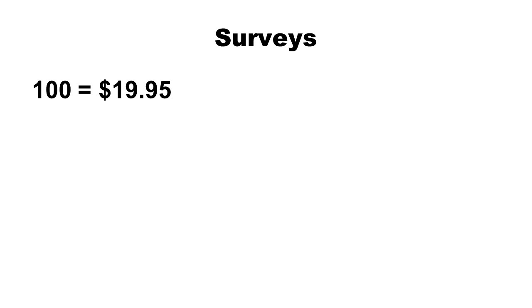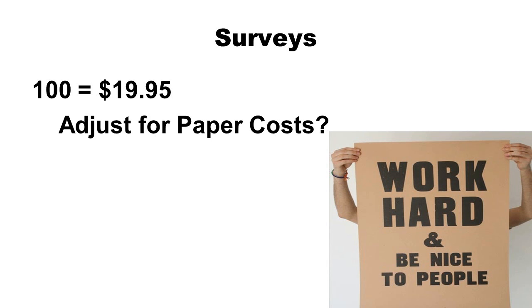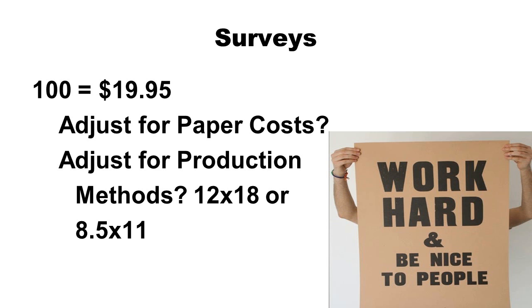Now say you had prices from 10 of your competitors and the average was $19.95, just like you would find in a survey result. Now say the customer wants to use more expensive paper or less expensive paper — how do you adjust for paper costs? We work hard to develop a correlation between surveyed prices and cost of paper so that you may recapture the cost of more expensive paper in your prices as well as make adjustments for production methods.